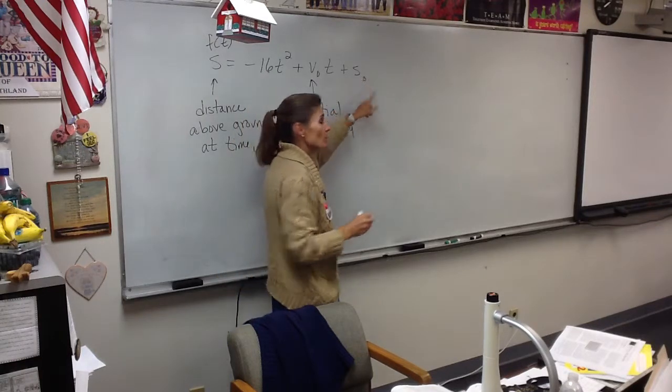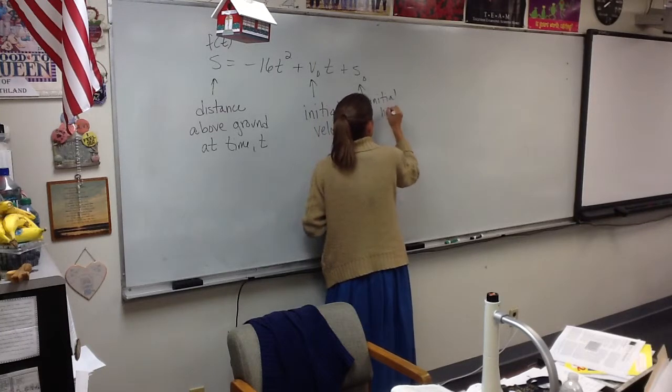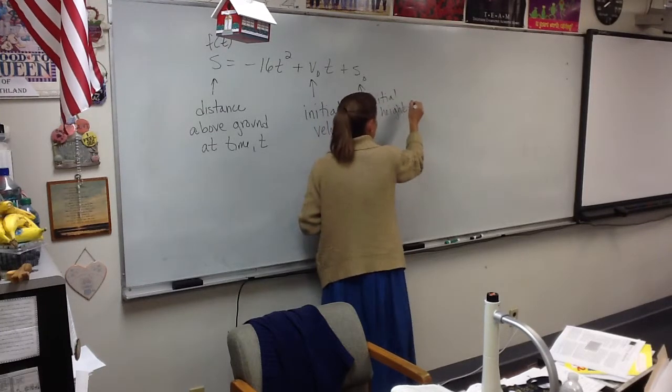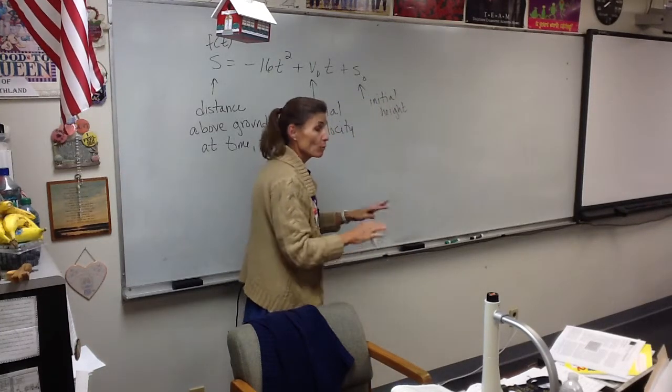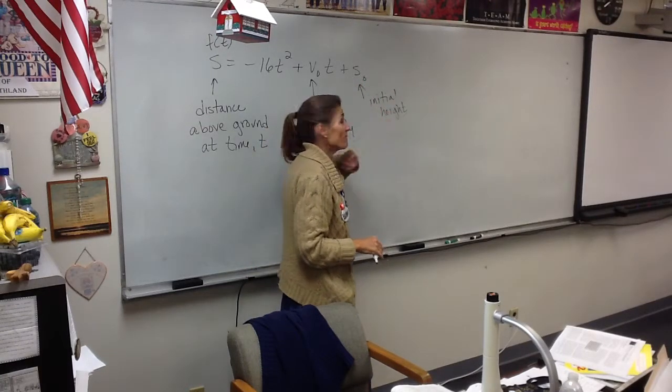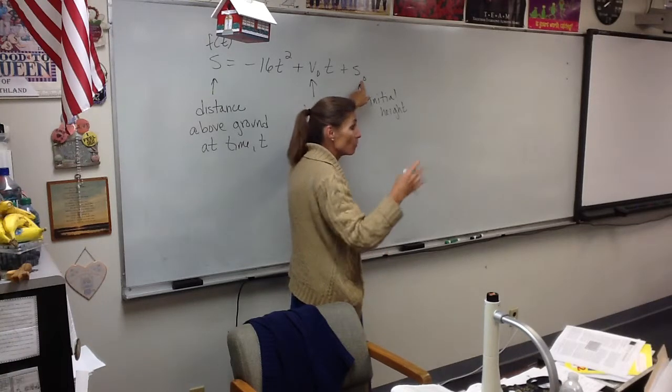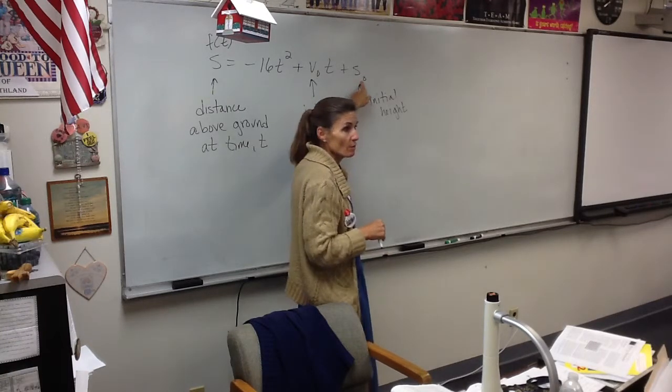And S sub-naught is the initial height. So in other words, if I were going to throw a ball into the air from ground level, S sub-naught would be zero. But if I were going to throw this off the top of a building, S sub-naught would be 20 feet, or however tall the building was.